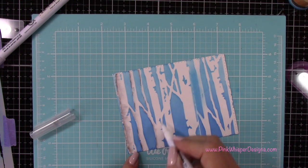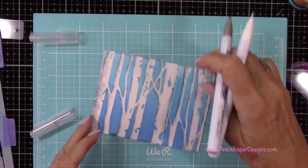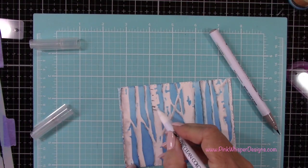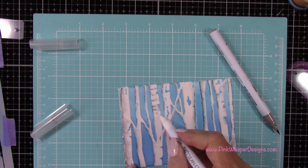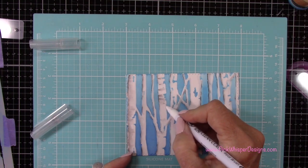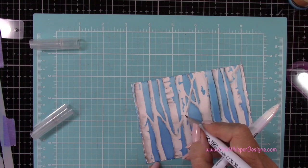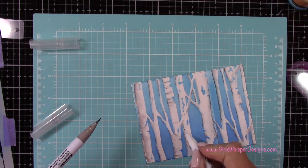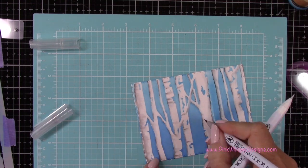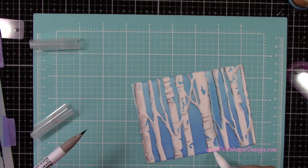So I'm going to continue doing this all the way across this card panel. But here in a second I want to show you something else I did to add even more dimension. So here I've completed that process. Now what I want to do is just add a few lines to these trees here and that will again just give them a little bit more of a look of birch trees. So I'm just adding a little line just here and there and then I'm just blending that out very gently.